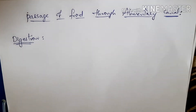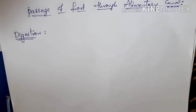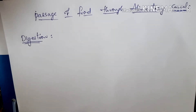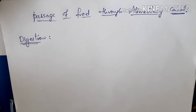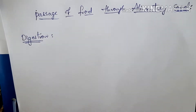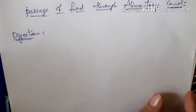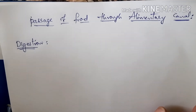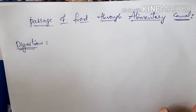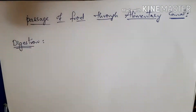Hello everyone. In the last video we discussed about the structure of chlorophyll and mechanism of photosynthesis. In today's class we will discuss about the passage of food material through the alimentary canal, or the process of digestion, which is in unit 1, nutrition lesson, and it is also an SSE topic. If you like this video, students, subscribe to this channel and press the bell icon to get the latest updates.